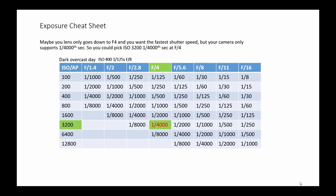Maybe your lens only goes down to f4 and you want the fastest shutter speed, but your camera only supports 1/4000th of a second, so you can pick ISO 3200 at f4 and that will give you 1/4000th of a second.